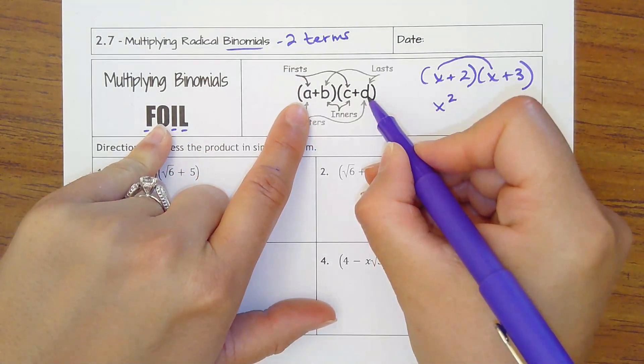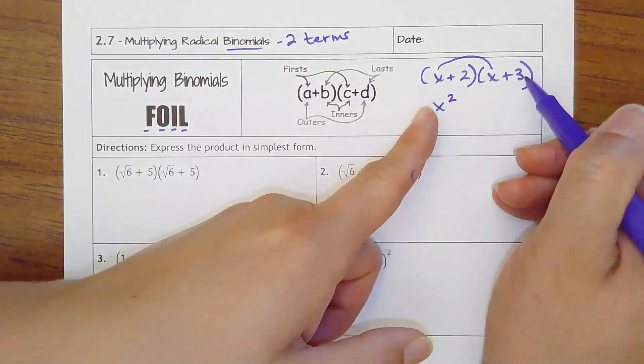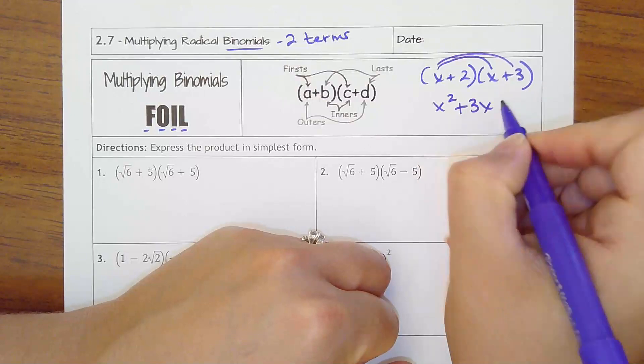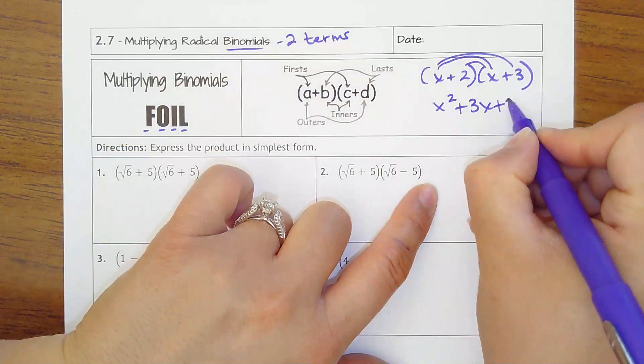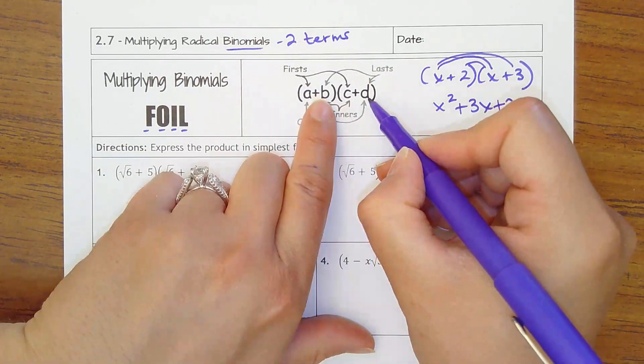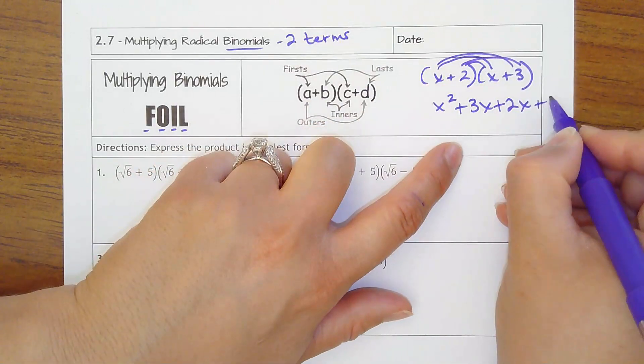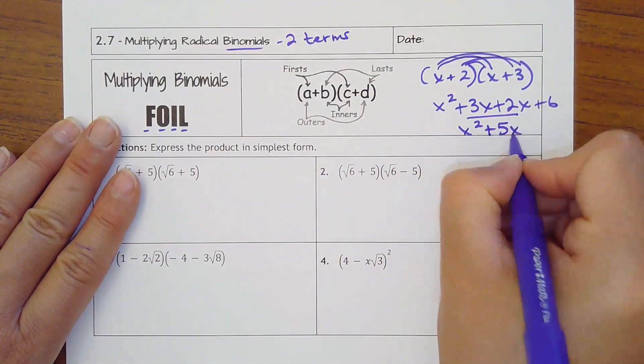Outers be the two farthest away. Like if this were a sandwich, these would be your bread. x times 3, which is 3x. Then you go inners, which are the two in the middle, two closest together, which would be 2 times x. And then last would be the ones that come last in the parentheses. So 2 times 3, which is 6. And then you combine your like terms to get x squared plus 5x plus 6.